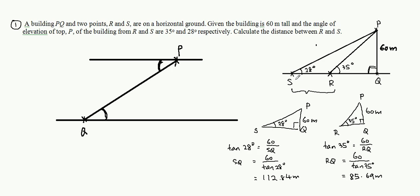So now you want to find the length of RS. You take the length of SQ minus the length of RQ. So RS is actually equal to 112.84 minus 85.69. Now we know that the distance of RS is actually equal to 27.15 meter.